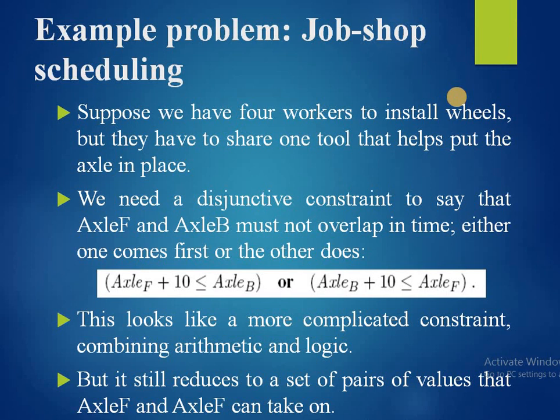Suppose we have 4 workers to install wheels, but they share one tool for placing the axle. We need a disjunctive constraint saying axle_lf and axle_lb must not overlap in time: either axle_lf + 10 ≤ axle_lb, or axle_lb + 10 ≤ axle_lf. This is a more complex constraint combining arithmetic and logic, but still reduces to a set of pairs of values that axle_lf and axle_lb can take on.